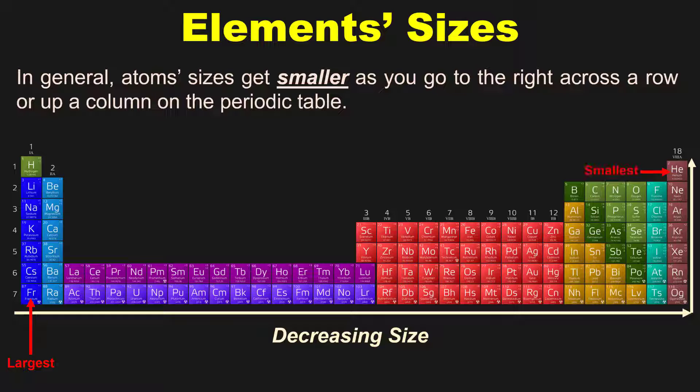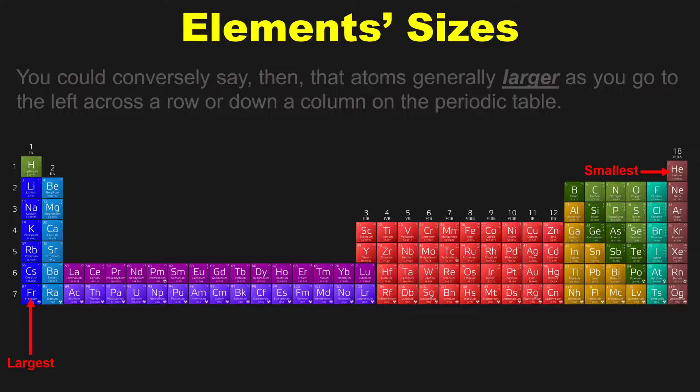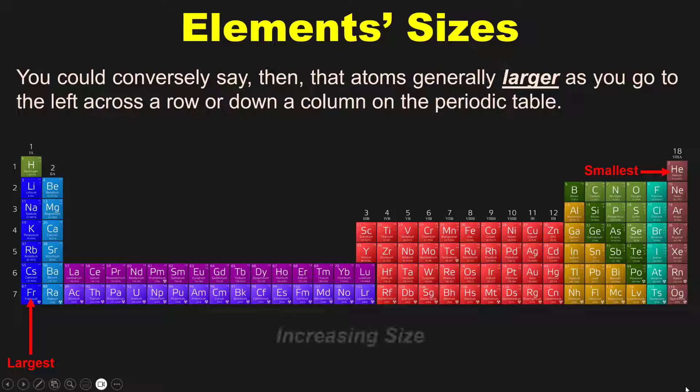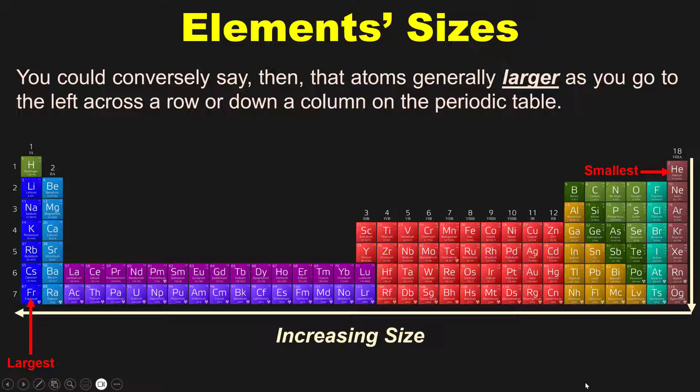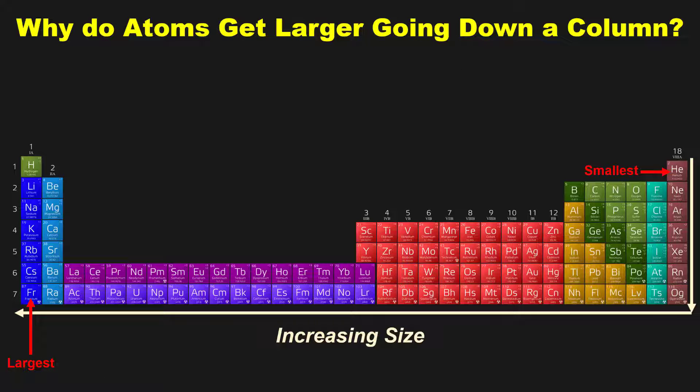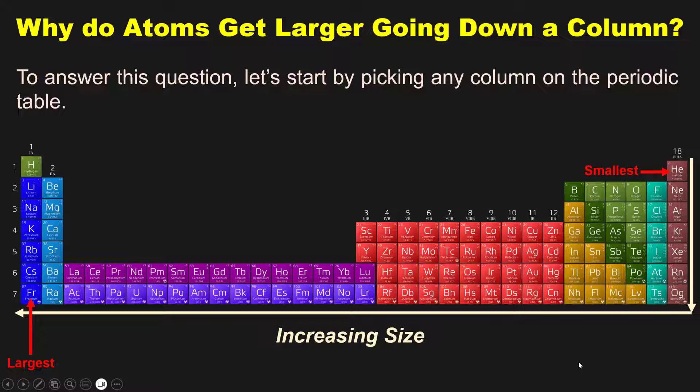You could conversely say that atoms generally get larger as you go to the left across a row or down a column on the periodic table. So this begs the question, why do atoms get larger going down a column?